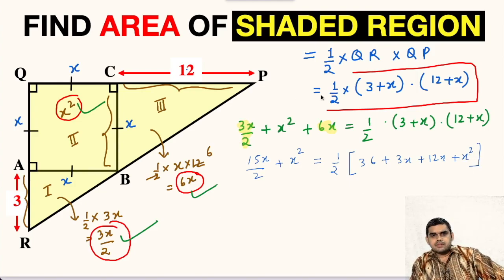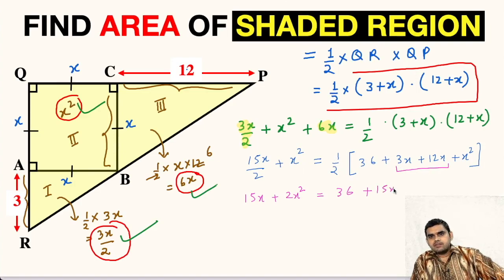This will be 36 plus 3X plus 12X plus X square. Now, we will multiply both sides by 2. This will give us 15X plus 2X square equals - here half will get cancelled when we multiply 2 on right hand side - we will get 36 plus these two terms will combine and give us 15X plus X square.